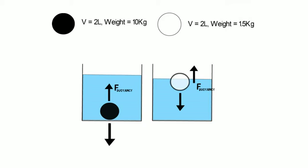Let's analyze the iron ball first. The force that pulls it down is the gravity force, equal to m1·g, where m1 is the mass of the iron ball and g is the gravitational acceleration, which is 9.8 meters per second squared. The gravitational force acting on the iron ball equals 10 kilos — that's the weight. There is also a buoyancy force acting on the iron ball, but the gravitational force is bigger than the buoyancy force, and that's why the iron ball sinks to the bottom.